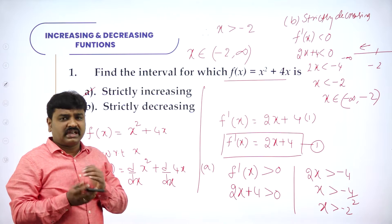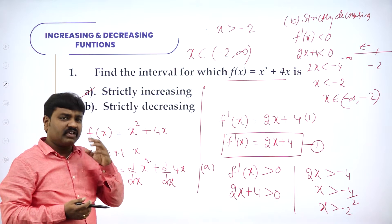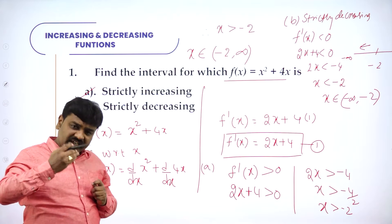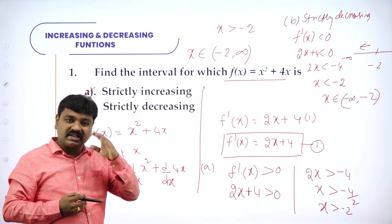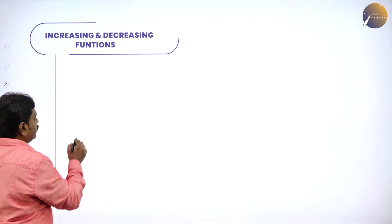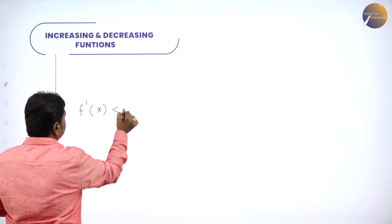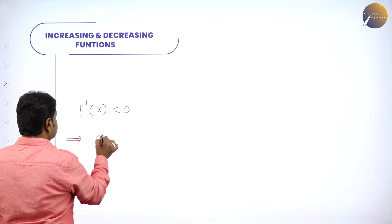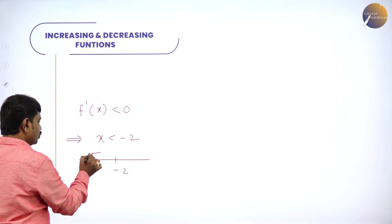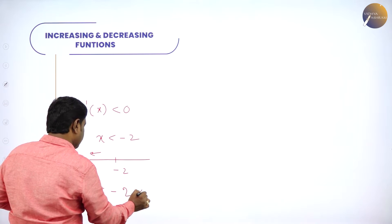First, differentiate both sides with respect to x and get f'(x). If they want the interval for strictly increasing, solve for f'(x) greater than 0. If they want the interval for strictly decreasing, solve f'(x) less than 0. For f'(x) less than 0 we get x less than minus 2, which means on the number line we go towards left to minus infinity, giving x belongs to (−∞, −2).